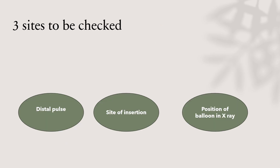Three sites to be checked for the position of the intra-aortic balloon pump: distal pulse by Doppler in dorsalis pedis and anterior tibial artery; the site of insertion for the presence of bleeding — a transparent dressing should be placed at the insertion site; and the position of the balloon on X-ray, which should be between the second and third intercostal space to avoid high or low insertion.